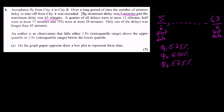A quarter of all delays were at most 12 minutes. A quarter means 25%, which means Q1. Remember: Q1 means 25% of the data, Q2 means 50% of the data, and Q3 or the upper quartile means 75% of the data. So Q1 is 12 minutes. Half the data were at most 17 minutes, so Q2 is 17 minutes, and 75% were at most 28 minutes, so Q3 is 28 minutes.